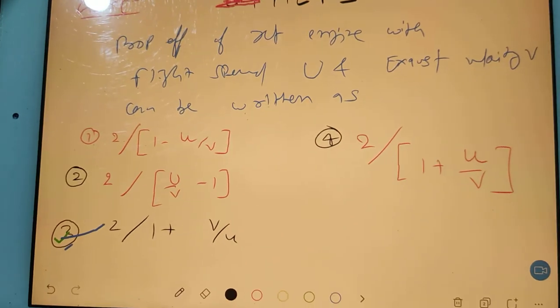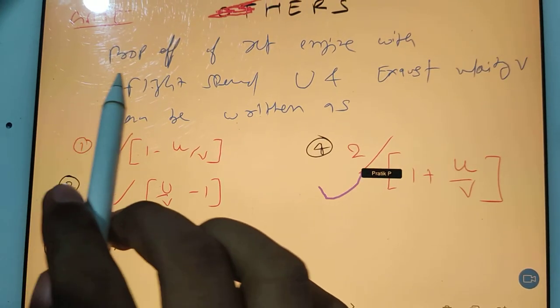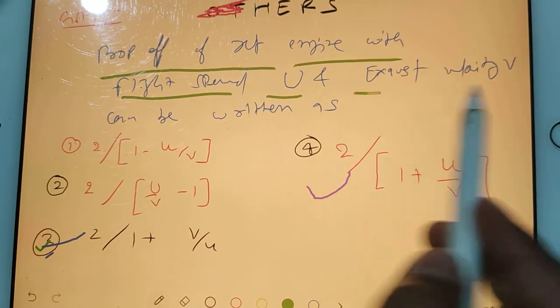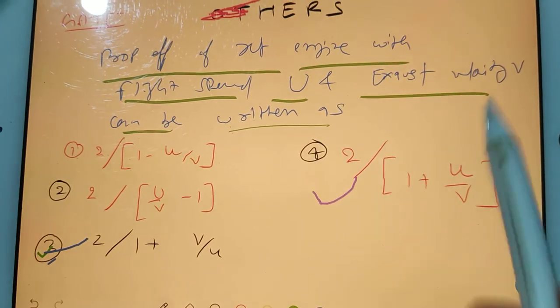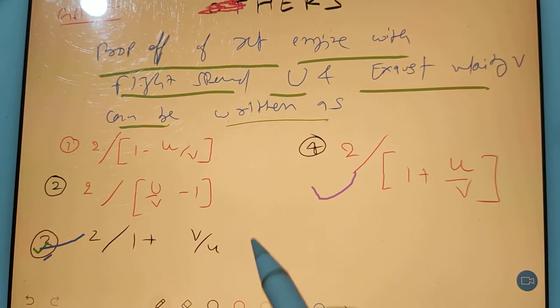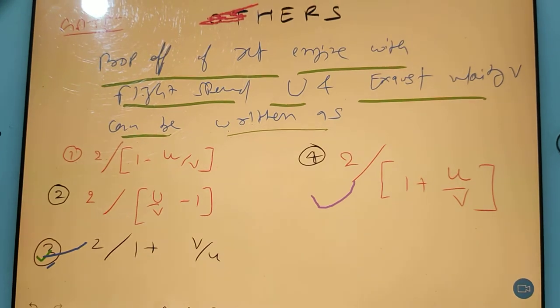This question is very easy. Propulsive efficiency of jet engine with flight speed u and exhaust velocity can be written as... Okay, so see if you guys are confused, you can just remember this part.